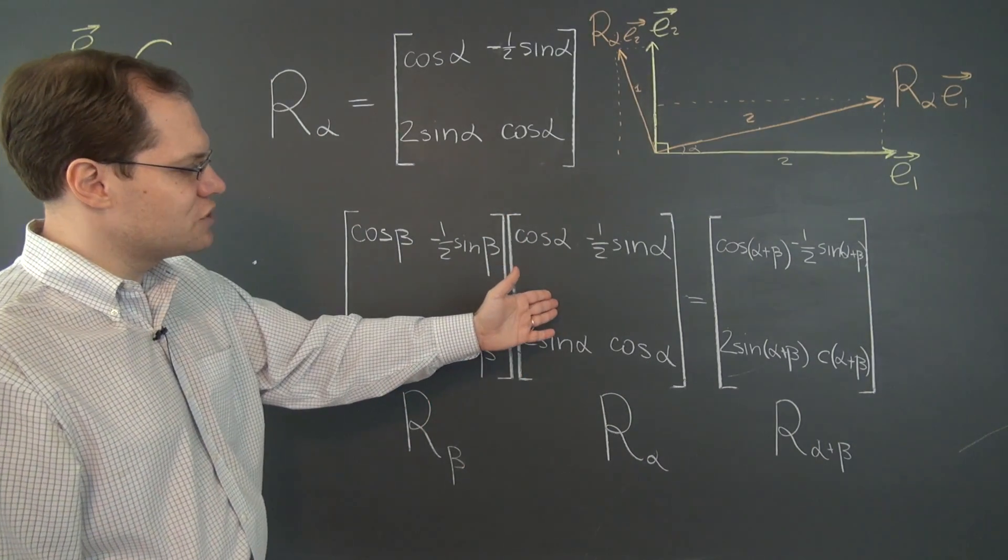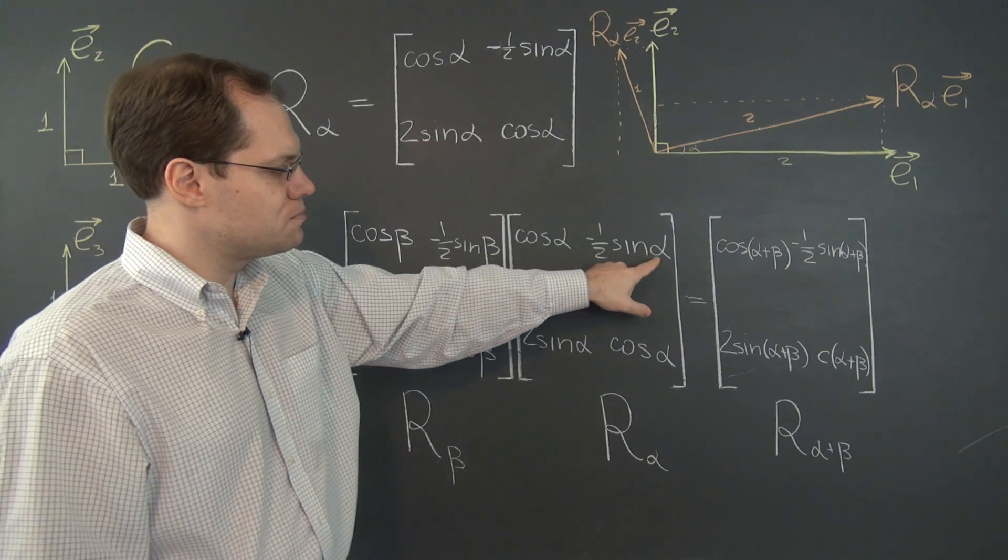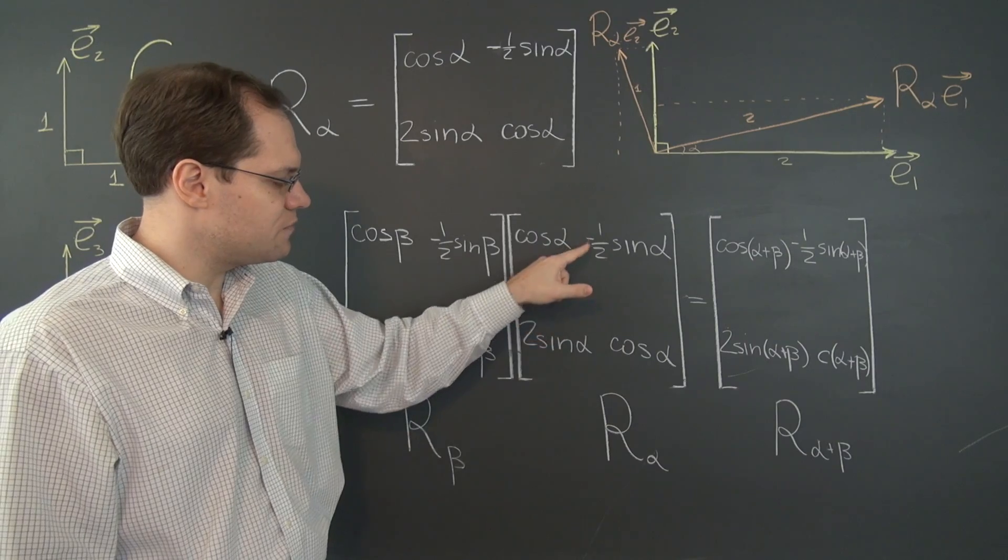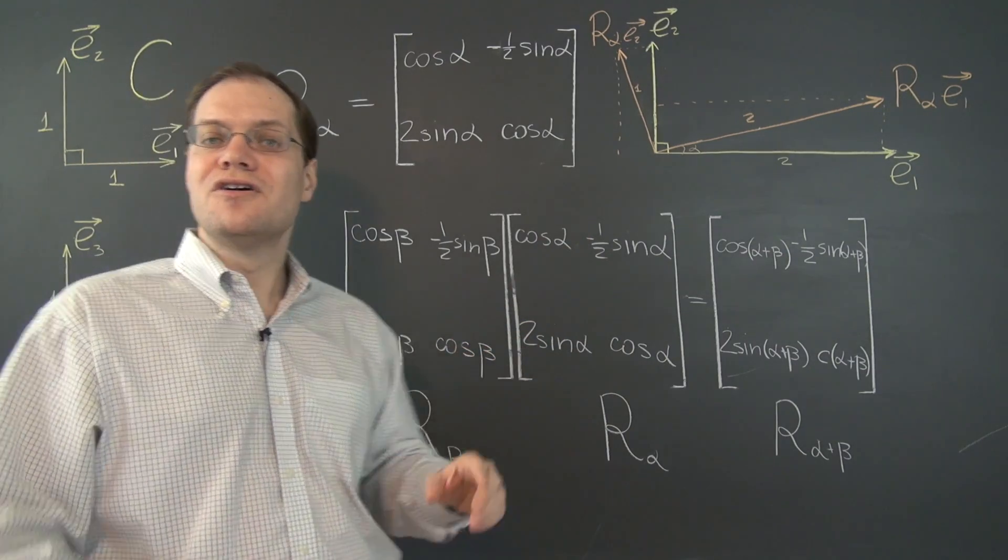And once again, to get the inverse of this matrix, we just have to plug in minus alpha for alpha, which will make the minus sign jump from here to here.